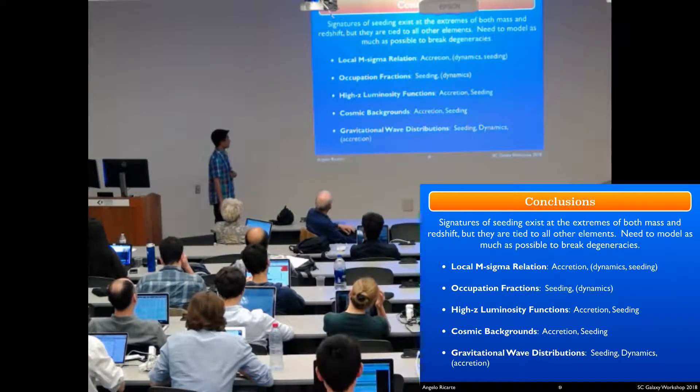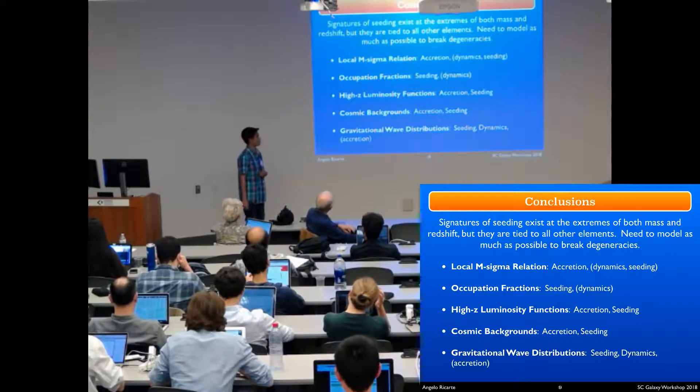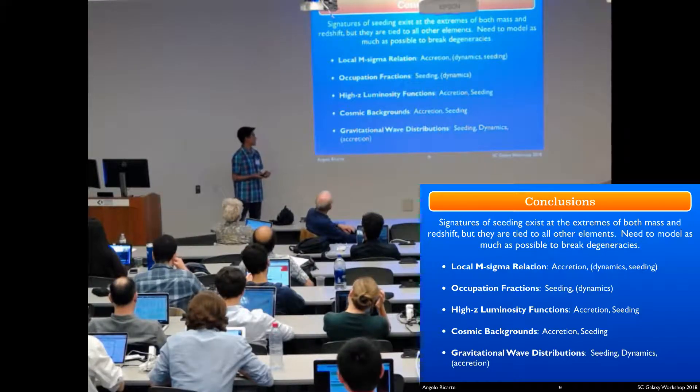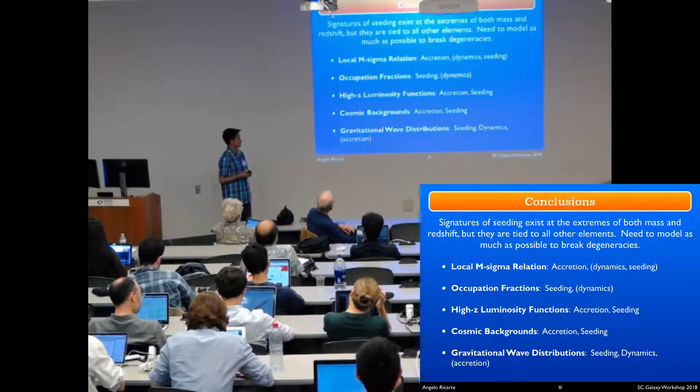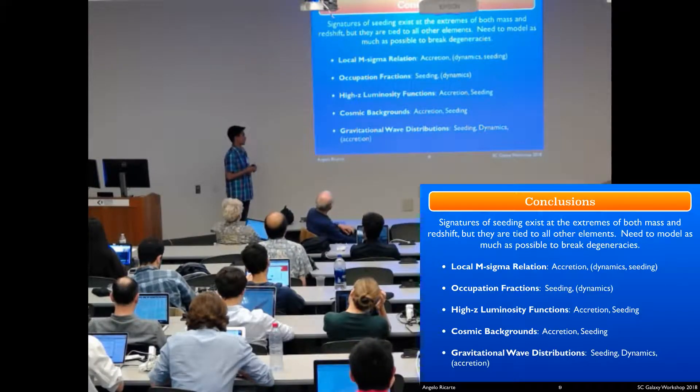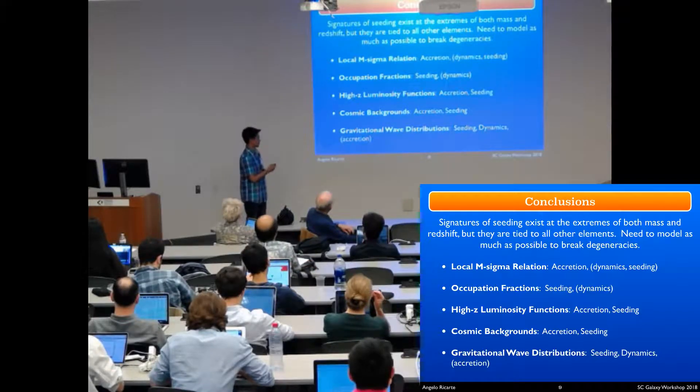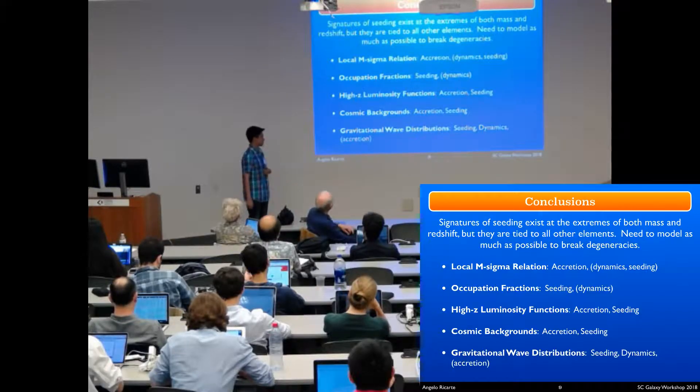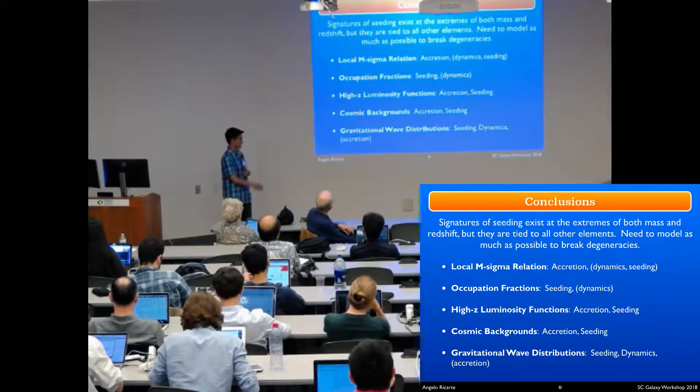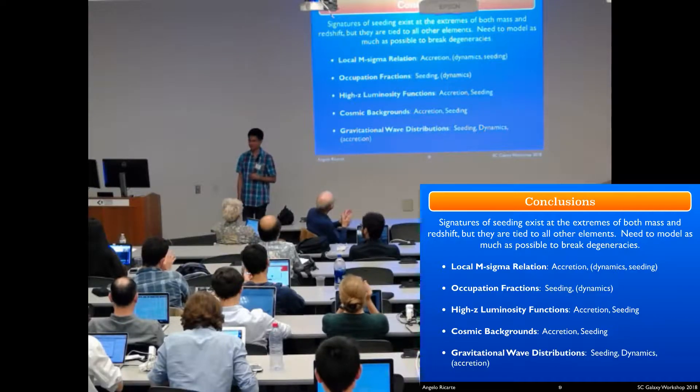In conclusion, there are signatures of seeding that exist at the extremes of both mass and redshift, but they're tied to all of the other modeling elements. You need to model as many things as possible to break degeneracies. Here I've listed several different observables as well as the modeling components in order that I think are most important for producing these things. I'll stop here and take questions. Thank you.